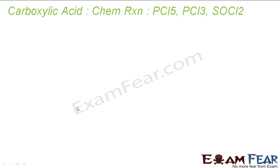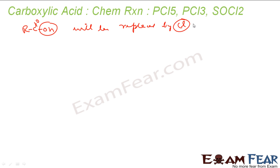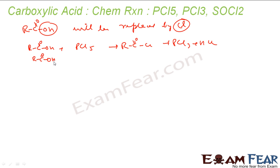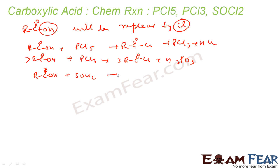The next reactions are with PCl5, PCl3, and SOCl2, where the OH group of RCOOH is replaced by chlorine. If RCOOH reacts with PCl5, you get RCOCl + POCl3 + HCl. Similarly, if RCOOH reacts with PCl3, you get RCOCl + H3PO3 (three equivalents of acid are needed). If RCOOH reacts with SOCl2, you get RCOCl + SO2 gas + HCl. This last method with SOCl2 is the most preferred because the gaseous byproducts SO2 and HCl escape on their own.